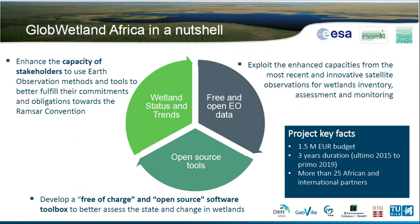With the new satellite sensors launched over the last five years, mainly through the Copernicus program — the Sentinel satellites — but as well other sensors like Landsat, now there is a lot of free and open earth observation data that is very suitable for monitoring wetlands. At the same time, there are many open source tools for GIS which are quite mature and suitable for the purpose. What is missing is putting those two components together to help the countries fulfill their obligations. This is where the Global Wetland Africa project comes in.